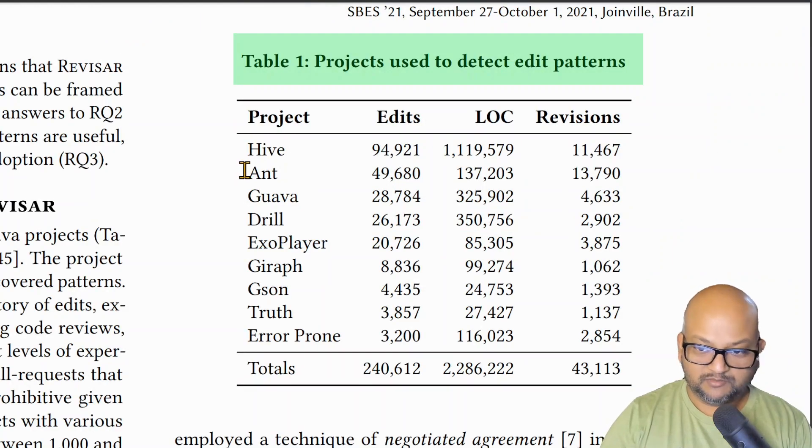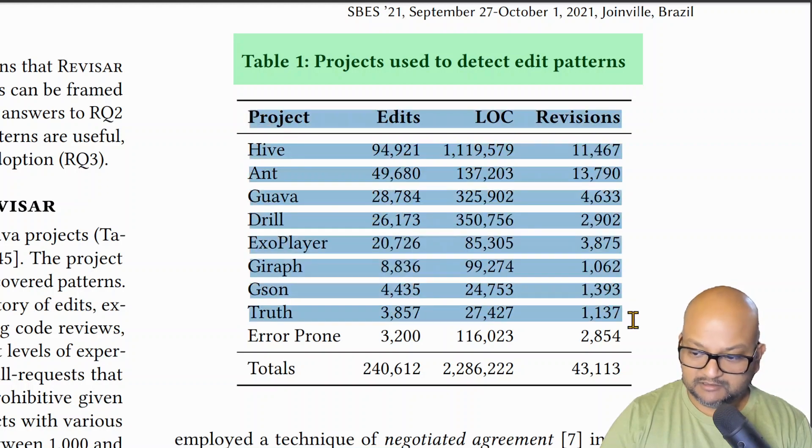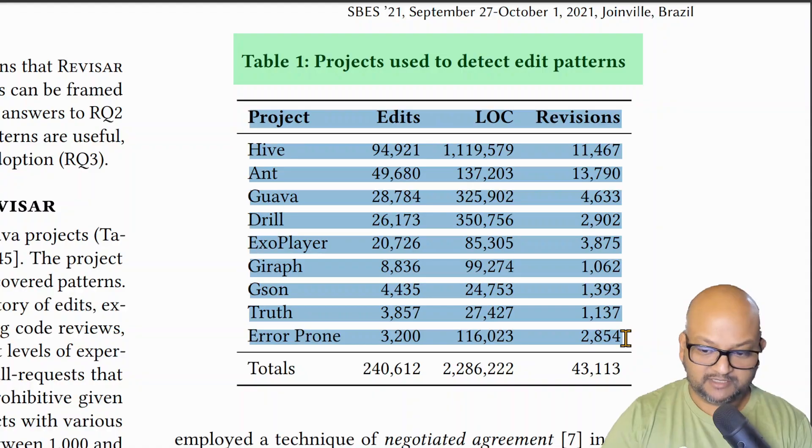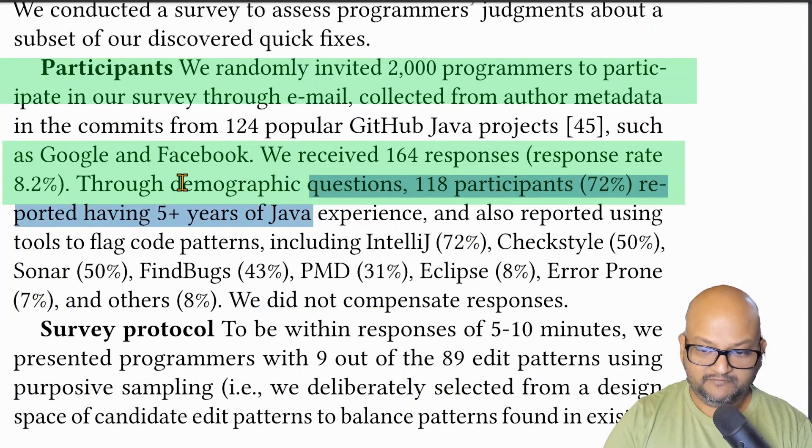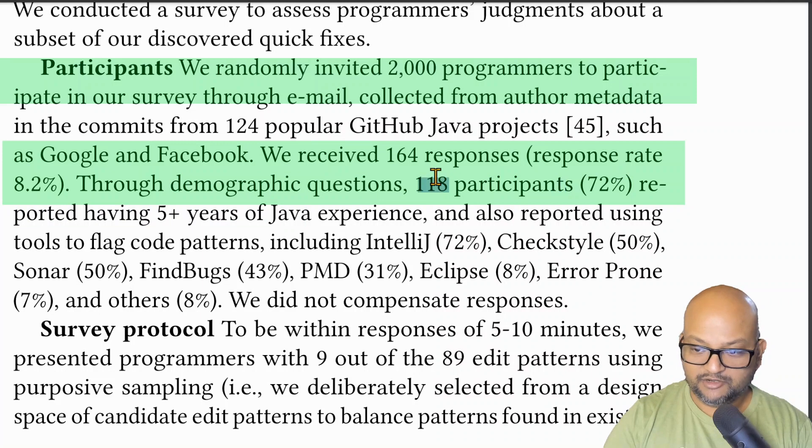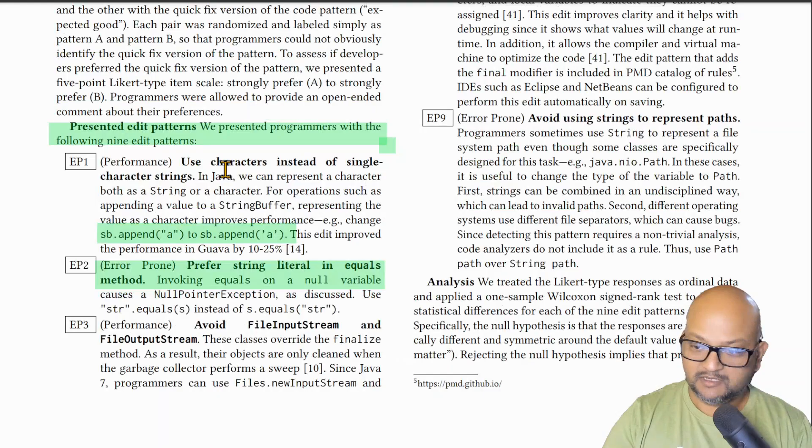So how did this tool work in practice? The authors ran this tool on nine large well-known open source projects and then ran a developer survey with 118 participants to see if those developers found the newly found and extracted edit patterns useful. Here are some examples of the kinds of quick fixes that Revisor found.